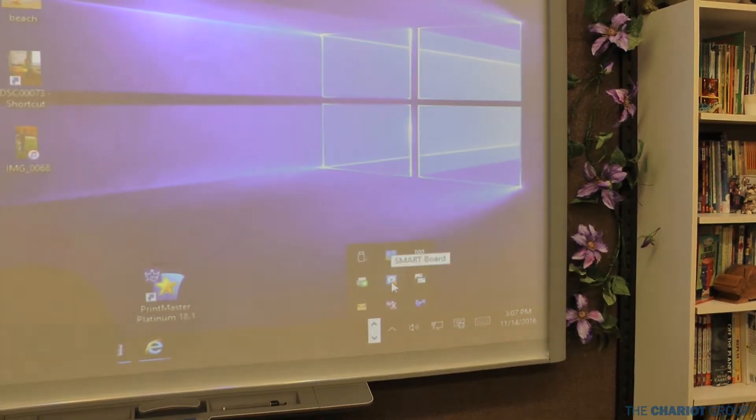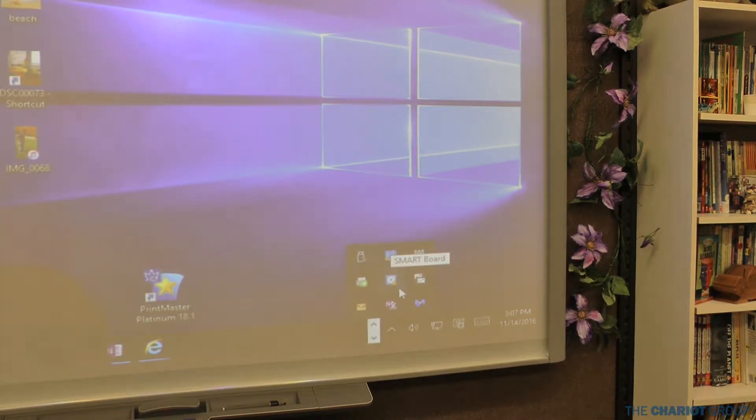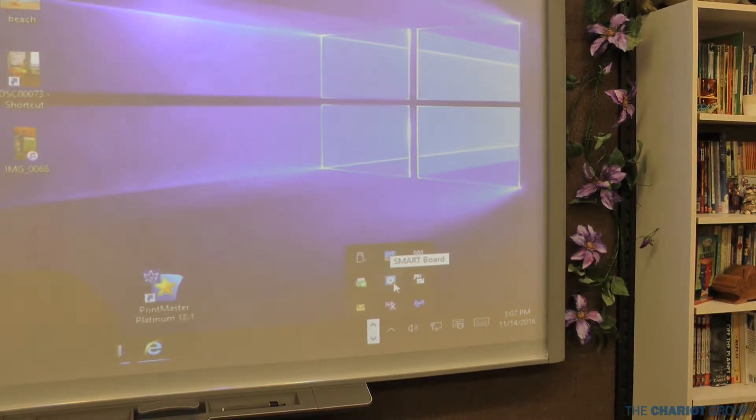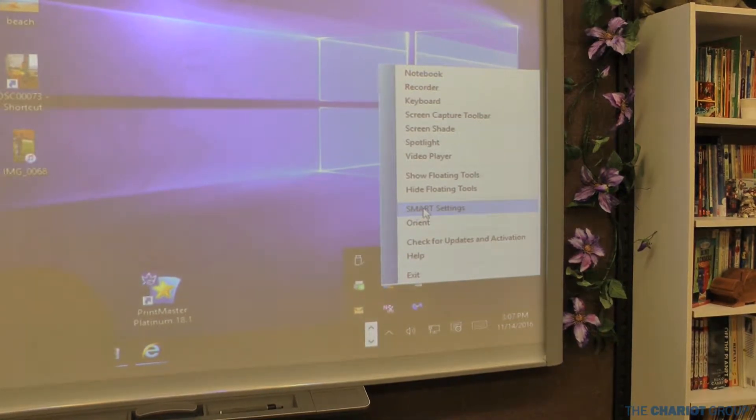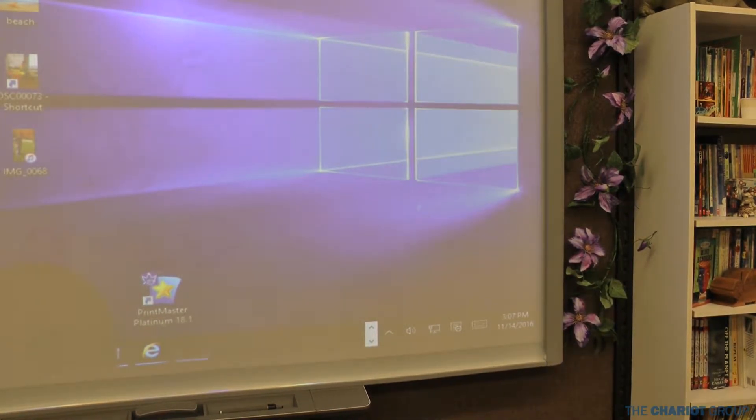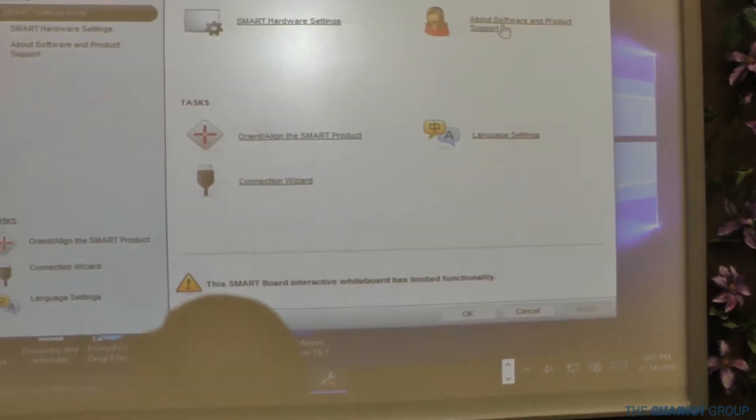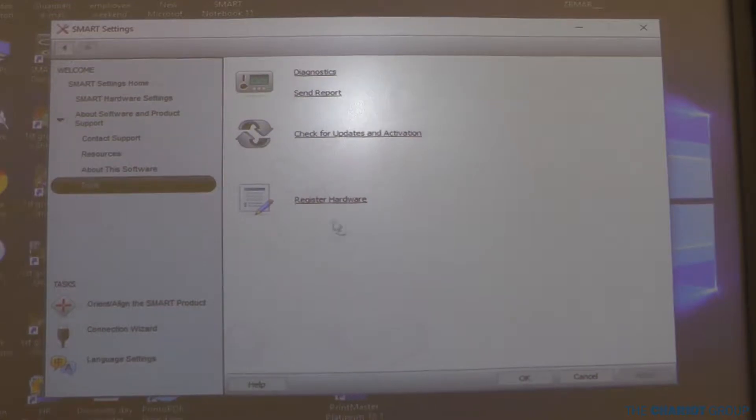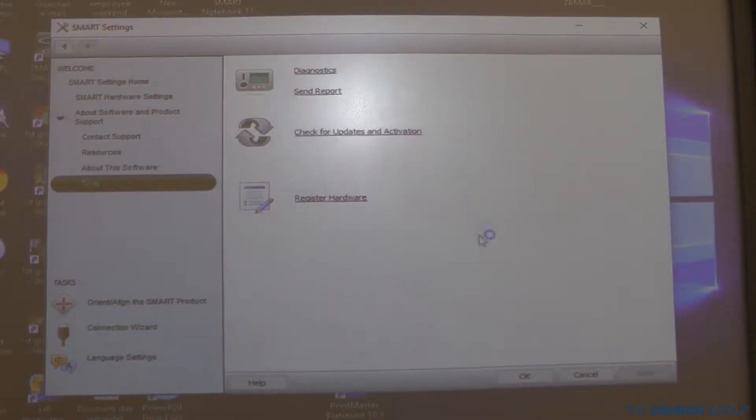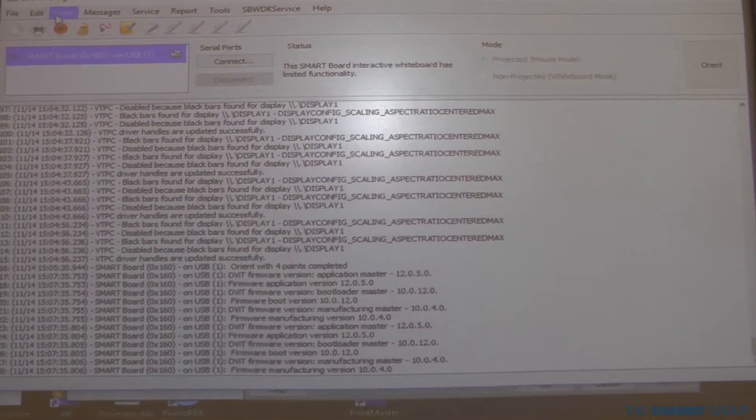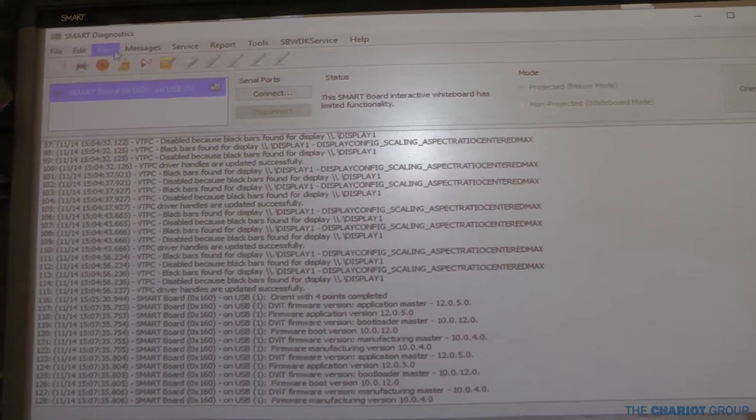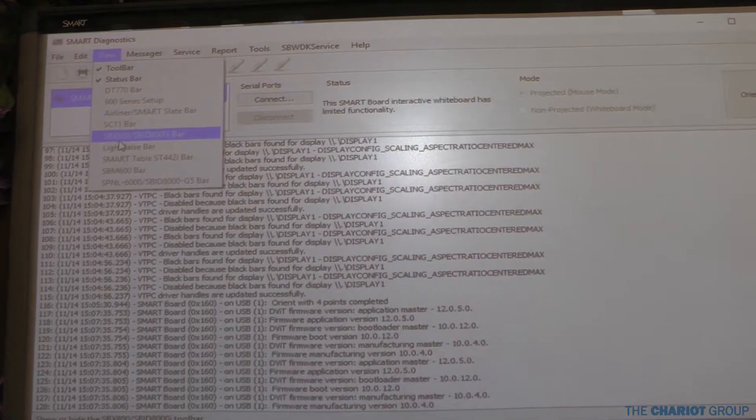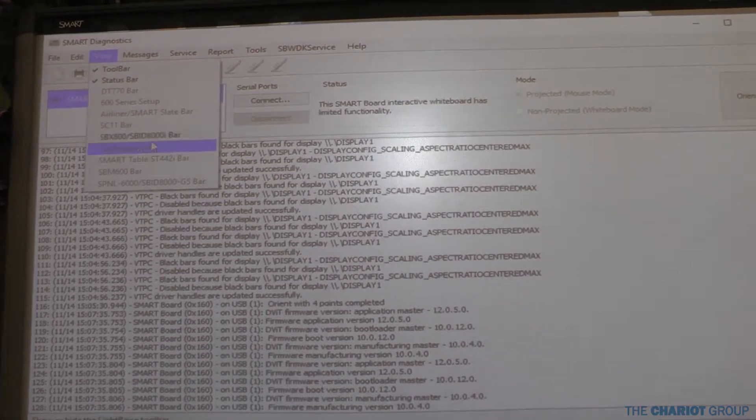Okay, we're going to the Smart tools. You can see right here the Smart tools has a little triangle with the exclamation mark in it, that usually means there's an issue with the 800 series cameras. So we're going to click on that, go into Smart settings, then into about, tools, diagnostics. Then in the upper left, Smart diagnostics, you're going to go into view and then SBX800 slash SBID8000i bar.